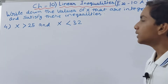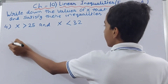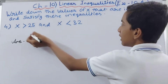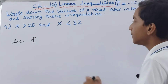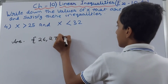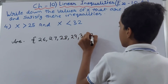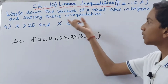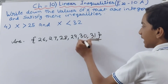The next part: x is greater than 25 and x is less than 32. The value of x has to be more than 25, so we open the set and write the numbers after 25: 26, 27, 28, 29, 30, 31, and then close it. We close at 31 because x has to be less than 32. The answer is {26, 27, 28, 29, 30, 31}.